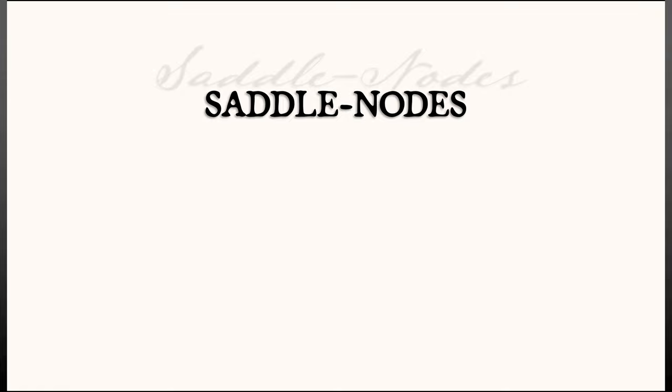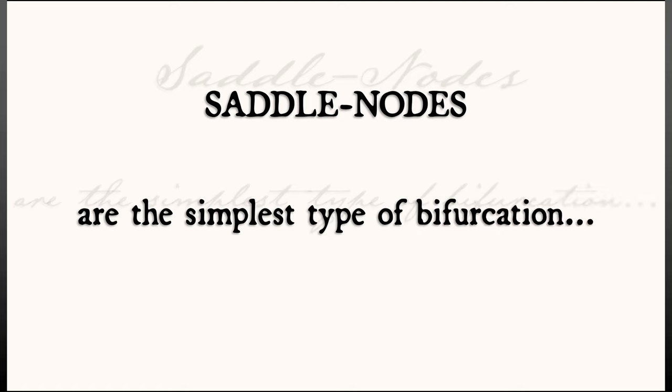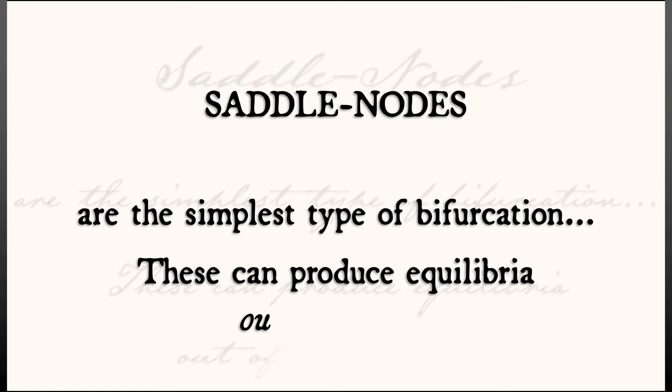The first such classic bifurcation is something called a saddle node. These are the simplest types of bifurcations. We've seen them before, and these are characterized by producing equilibria out of nothing.